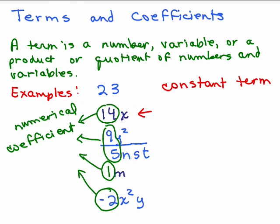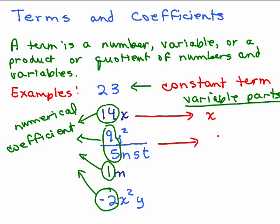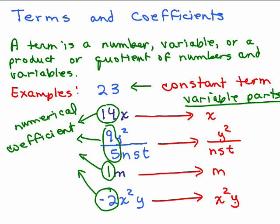So what's the other part called? If you don't have just a number, that means you've got some variables. We also have the variable parts. The variable part for 14x will just be the x. The variable part here will be y² over nst. The variable part here is m. And the variable part here is x²y. So any time you have a term with variables, there's always a numerical coefficient and a variable part. If it's just a number, it's called a constant or constant term.